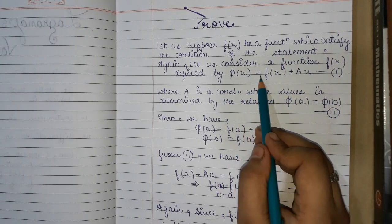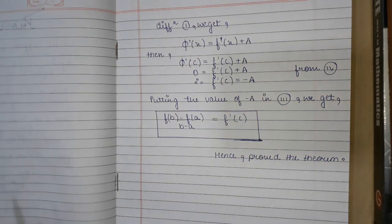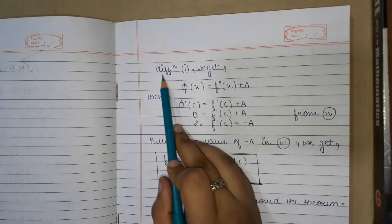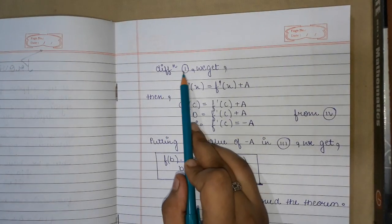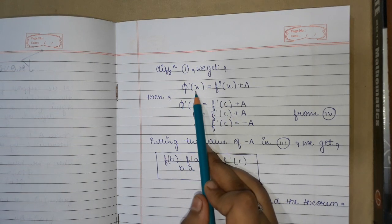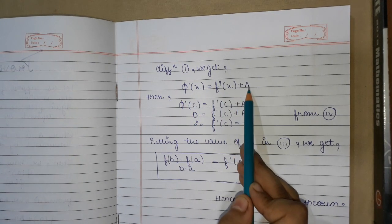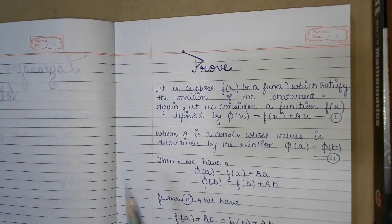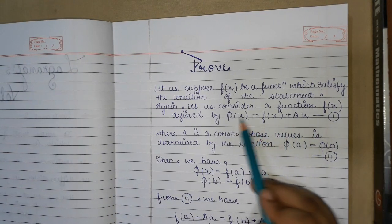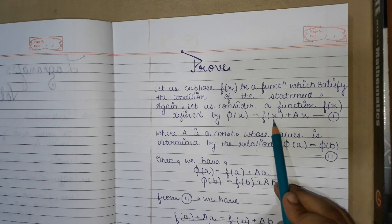From equation 1, φ(x) = f(x) + Ax. Differentiating equation 1 with respect to x gives us φ'(x) = f'(x) + A.